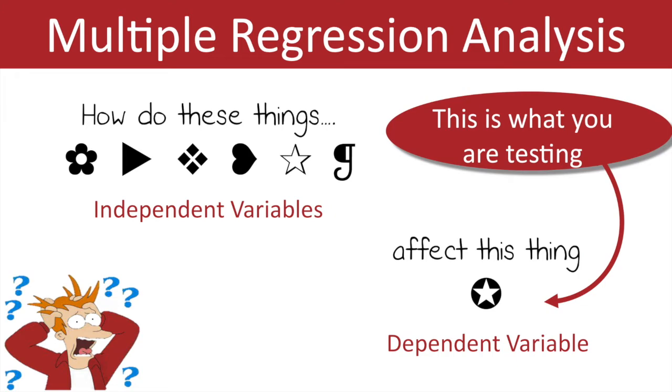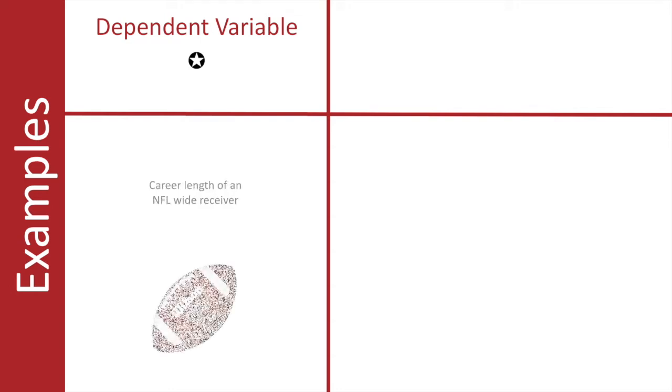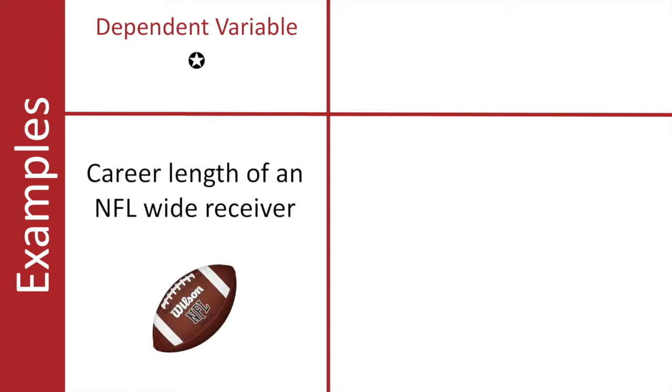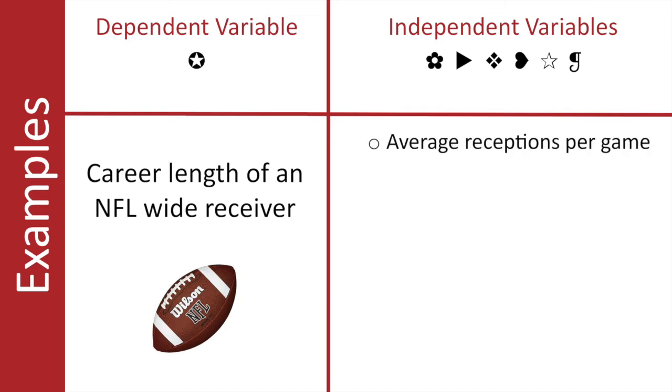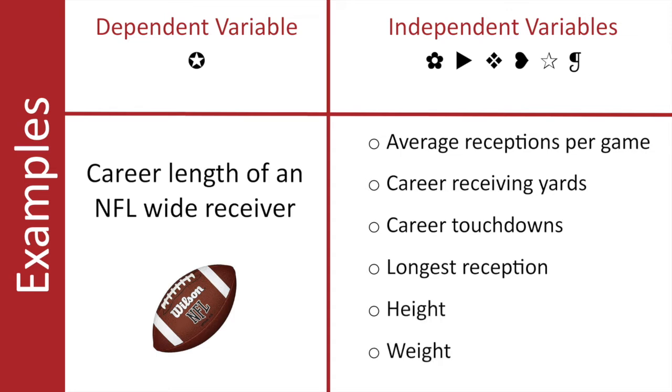I always think it's helpful to see some examples, so let's see. First we need a dependent variable, something to research. I'm a big football fan and I would like to know what determines the career length of an NFL wide receiver. Well, okay, what could some factors be in a receiver's career? Those would be my independent variables.